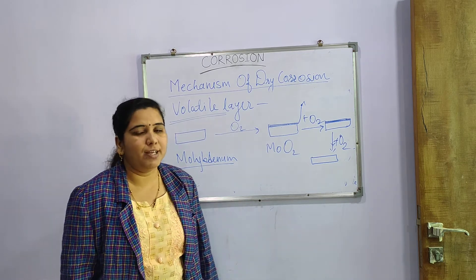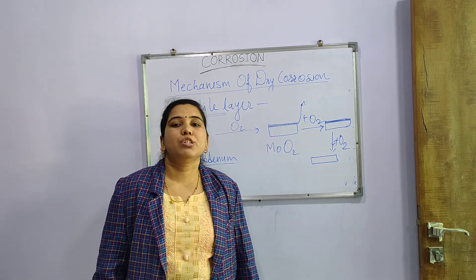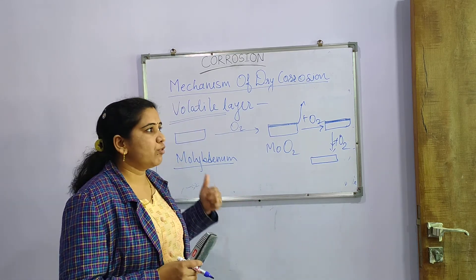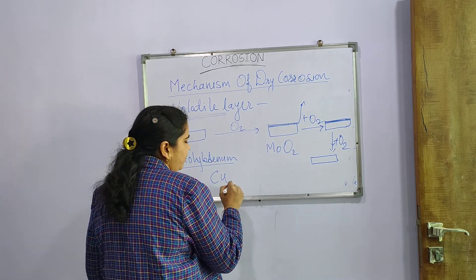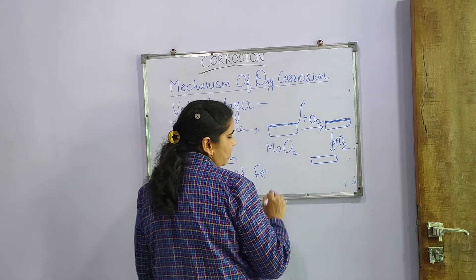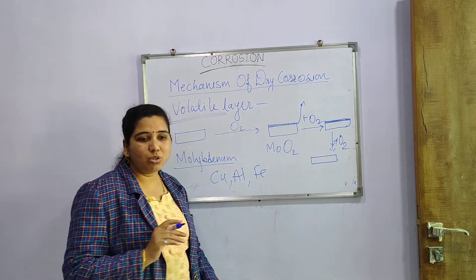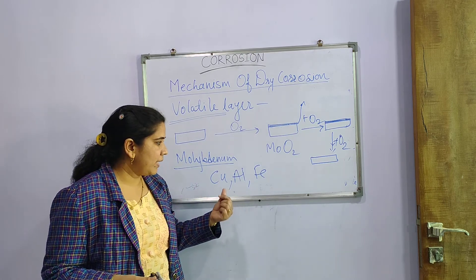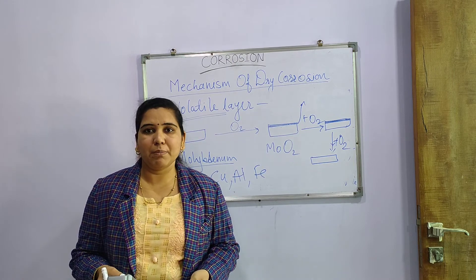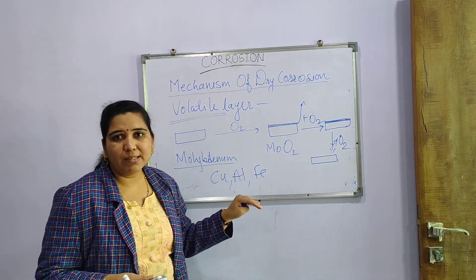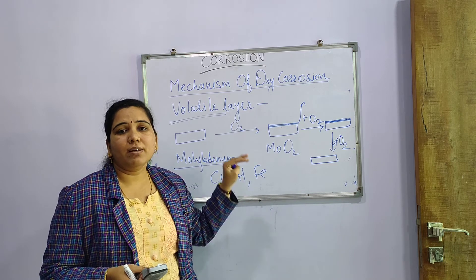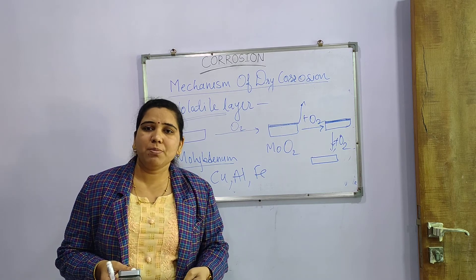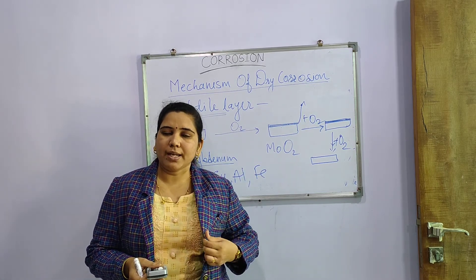So this is the volatile type of layer, where molybdenum dioxide is the example. In the case of the stable layer, examples are copper, aluminium, and iron — metals used extensively in day-to-day life. In this way, we have seen today the mechanism of dry corrosion and how dry corrosion due to oxygen forms different types of oxide layers. Thank you very much.